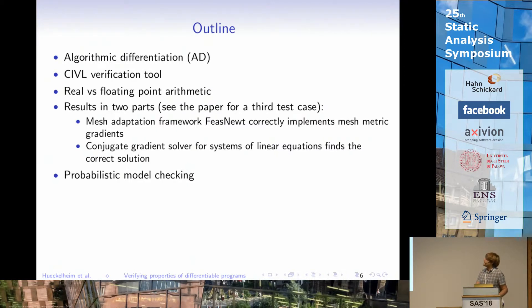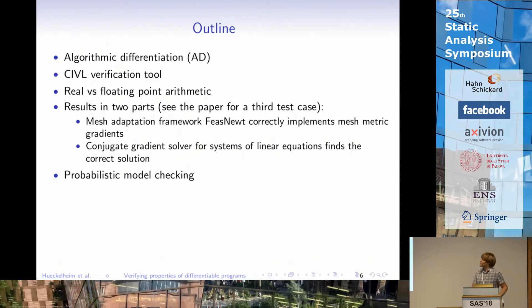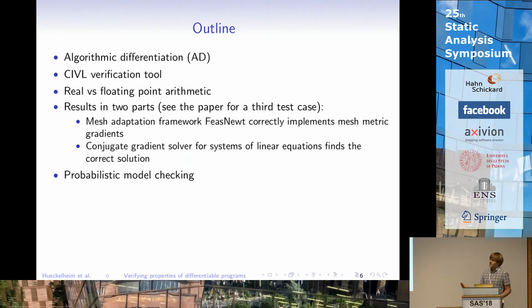To talk about this I need to introduce a couple of things. There's a technique called algorithmic differentiation, which I have a slide on. The verification was done with the CIVIL verification tool — probably not everyone knows this, so I'll go into that. CIVIL has a perhaps unusual notion of what a floating-point number is, so I'll discuss different ways of dealing with those. Then I have two test cases. Our paper actually has a third test case, which I'm skipping for time reasons.